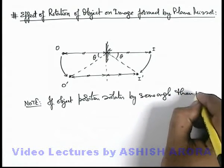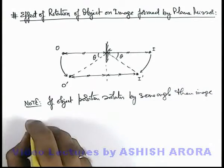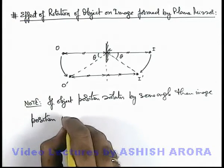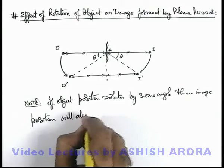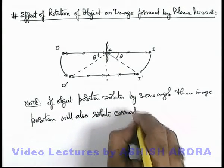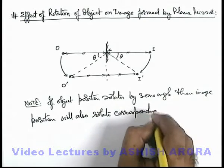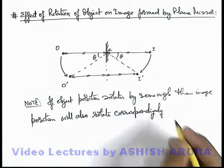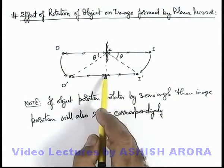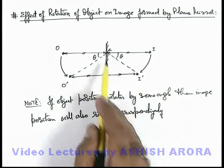then image position will also rotate correspondingly. Correspondingly means keeping the laws of reflection valid, that image distance is same as that of object distance from mirror.